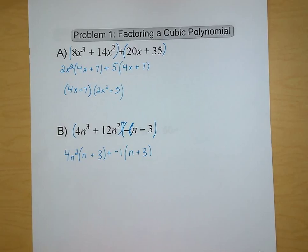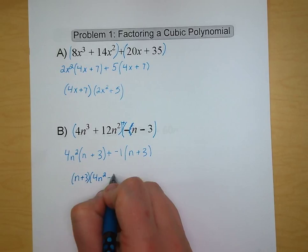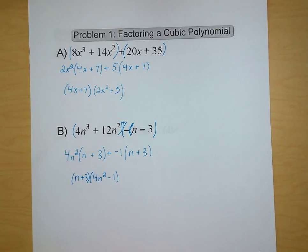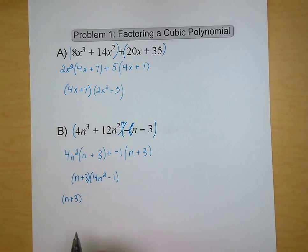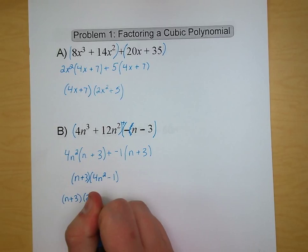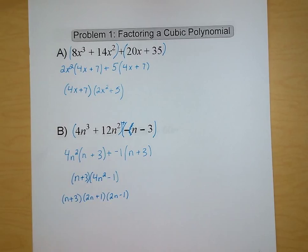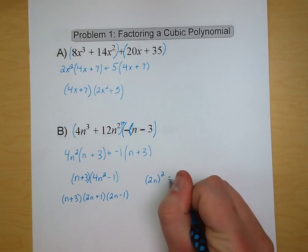I see I have an n plus 3 in both of my terms, so that is what we're going to factor out next. We have n plus 3 times the quantity 4n squared minus 1. Now as I look at 4n squared minus 1, that kind of looks like one of those special cases we did yesterday — that certainly looks like a difference of two perfect squares. We take the square root of both pieces: we have 2n plus 1 and 2n minus 1. And now we have our polynomial broken down into three factors.